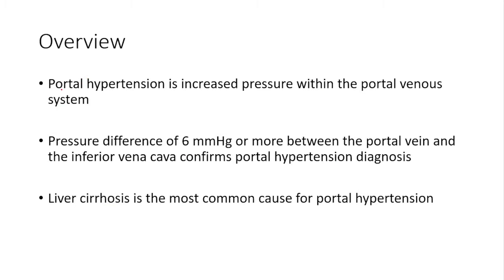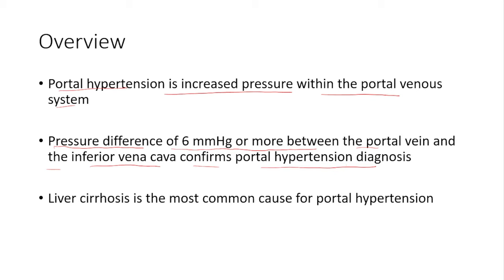Portal hypertension is increased pressure within the portal venous system in the abdomen. A pressure difference of six millimeters of mercury or more between the portal vein and the inferior vena cava confirms the portal hypertension diagnosis. Liver cirrhosis is the most common cause of portal hypertension.